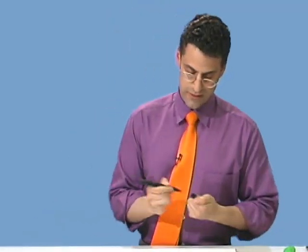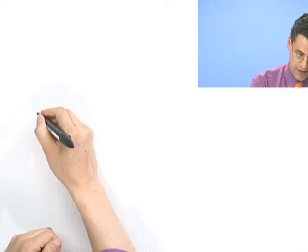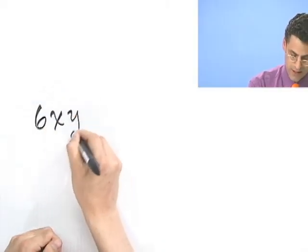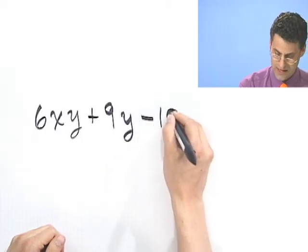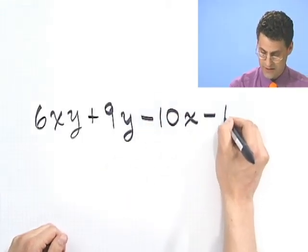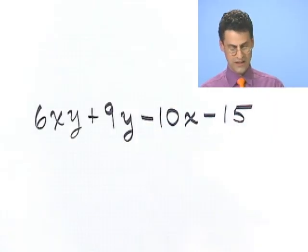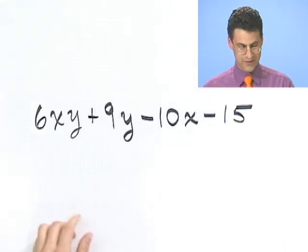Okay, so you know if you can find a greatest common divisor, greatest common factor rather, you can sort of pull it out, that's great. But sometimes things don't have a common factor throughout. For example, let me give you the following to consider.